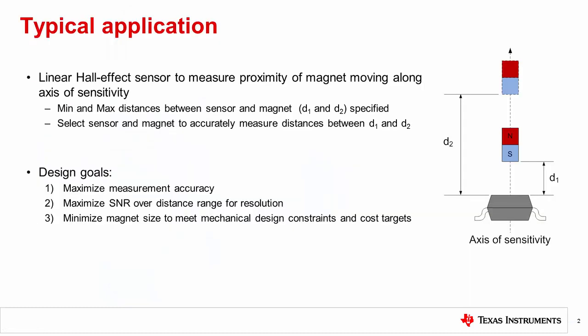In the typical application, a linear Hall Effect sensor measures the changing magnetic flux density along the north-south axis of a magnet that is moving along a straight line. The worst-case distances between the sensor and magnet, D1 and D2, are specified. The objective is to accurately measure distances between D1 and D2 by processing the sensor output.